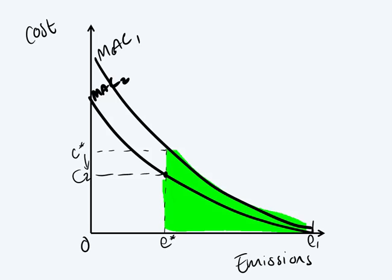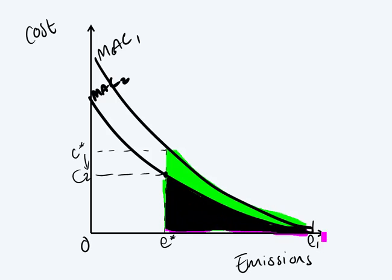And what I also want to show you is the total cost, not only the marginal abatement cost, but the total cost decreased. So the total cost went from the green area, the green area should be pink, but the black area below the MAC2 curve.